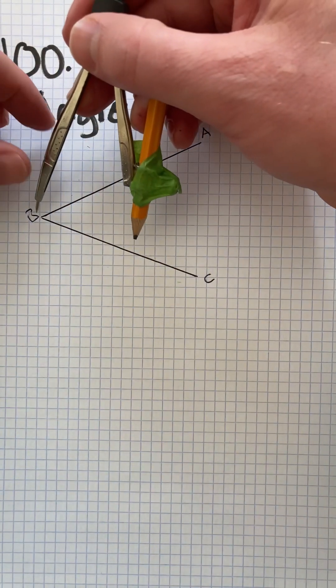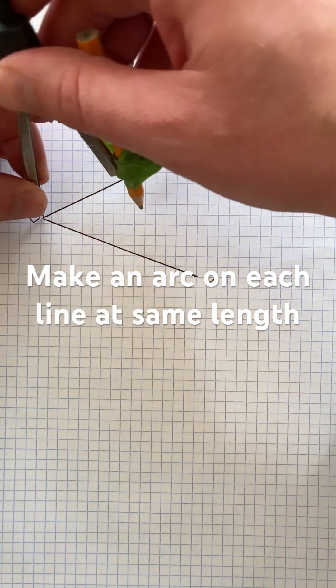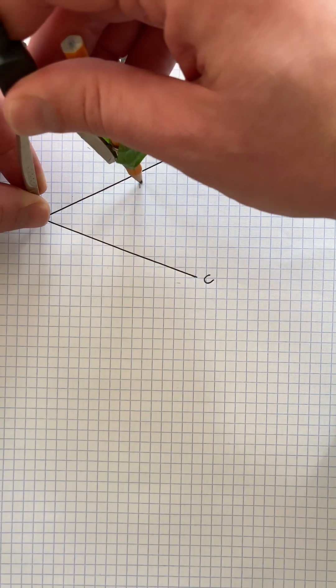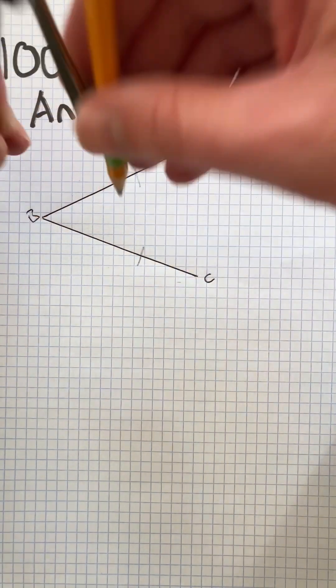Put the point on that angle there, make an arc on line AB, and make another arc on line AC.